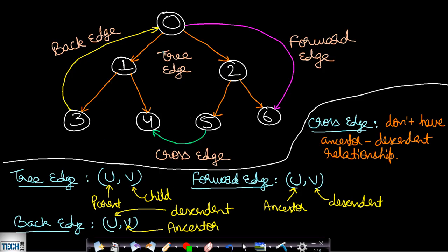Let us first look at some concepts useful for Tarjan's algorithm. The first concept is the four types of edges. A tree edge is when there is an edge from u to v with a parent-child relationship. You can see that all the red edges are tree edges. For a forward edge, u is an ancestor and v is a descendant, but without a direct parent-child relationship — the pink line shows a forward edge.